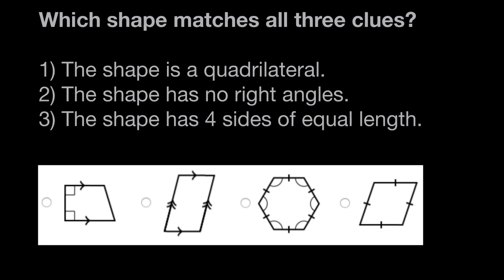Which shape matches all three clues? So here we have three clues, and we want to see which shape down below matches all three of these statements. Let's start with the first clue. The first clue says the shape is a quadrilateral, quad, meaning four-sided.